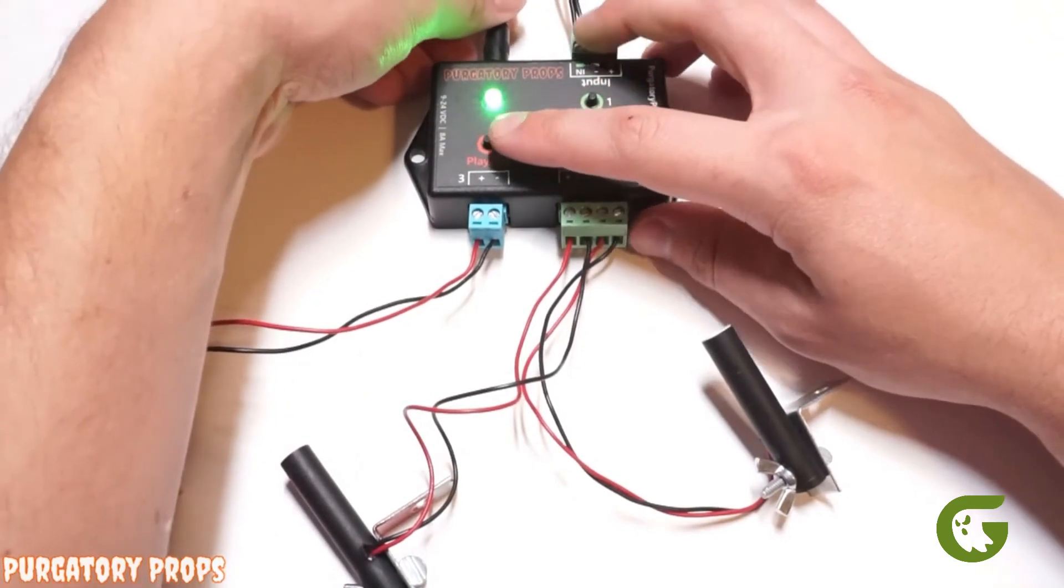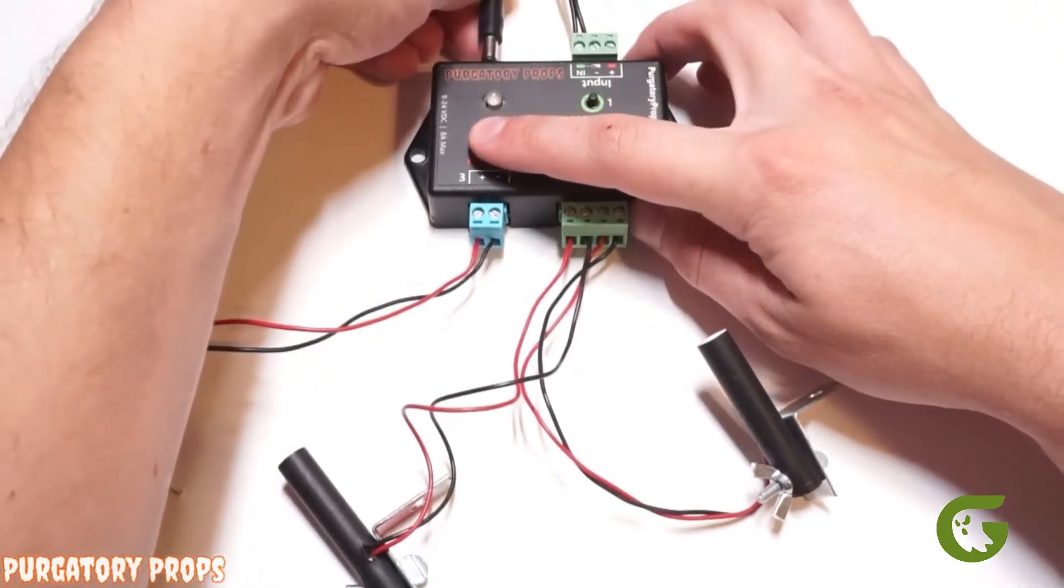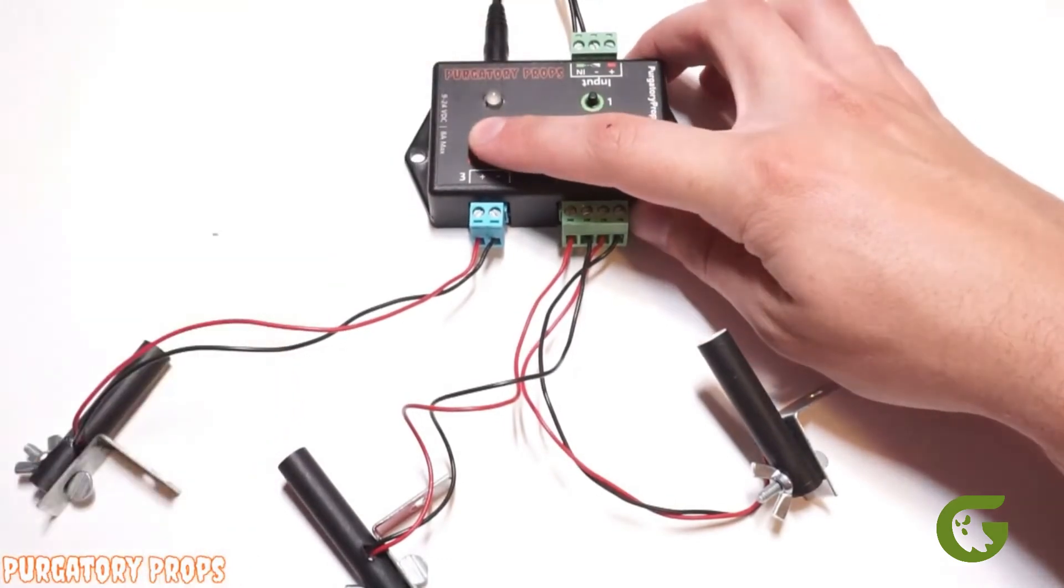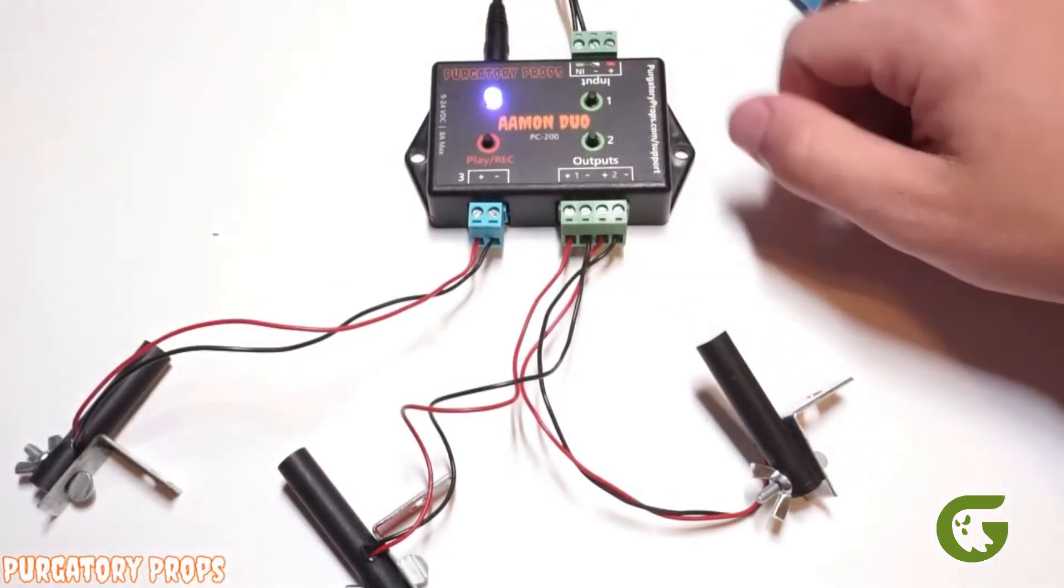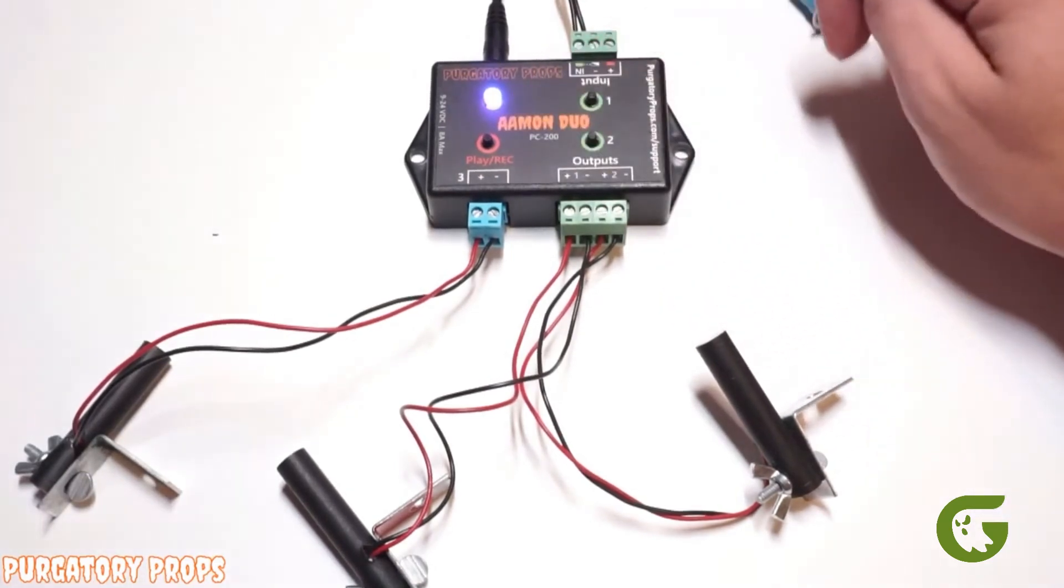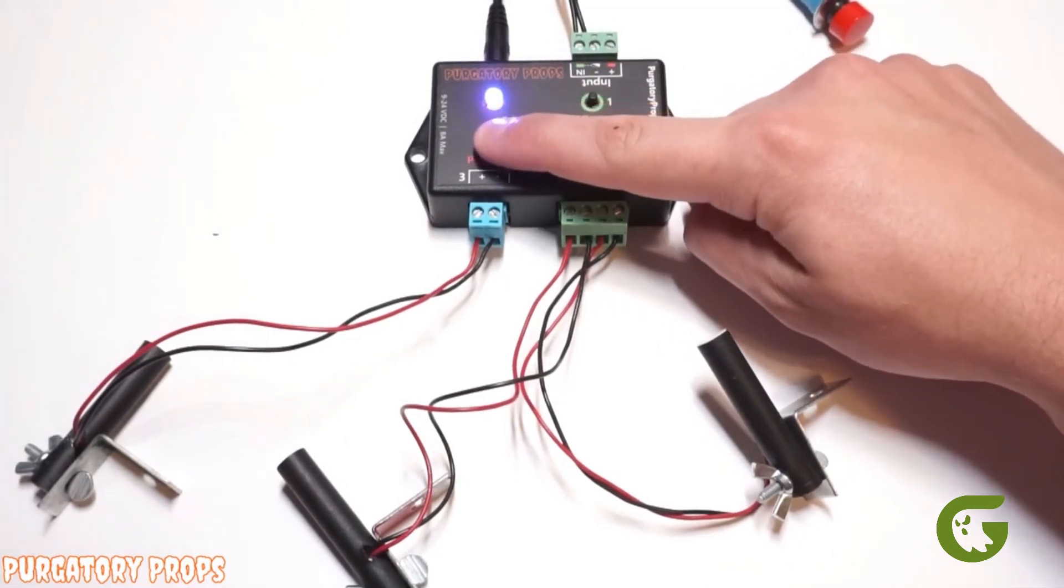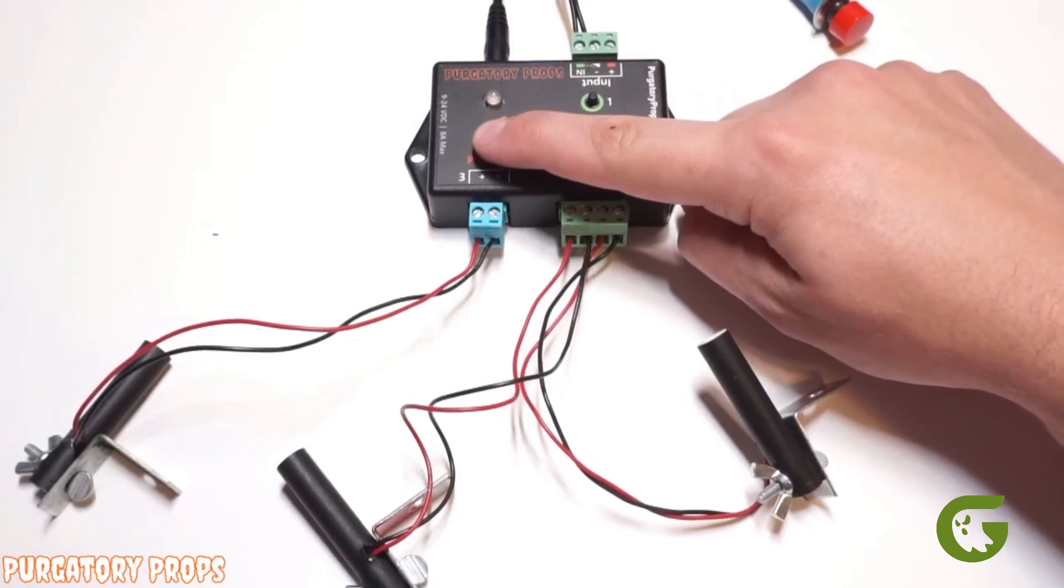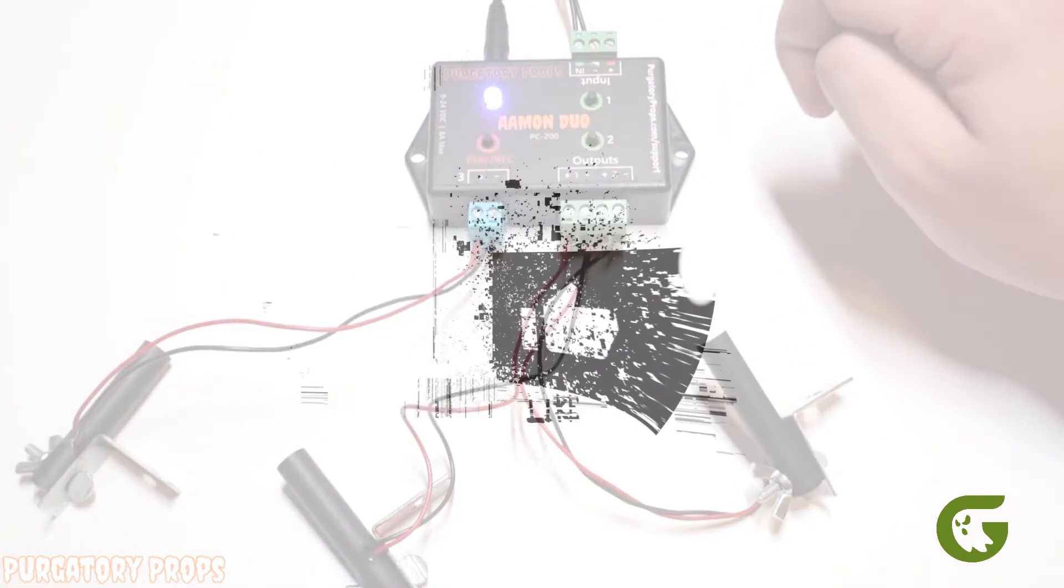If you don't want anyone to mess with your animation, just hold the play record button when turning it on, release when it's red. And now you'll see the purple LED. This indicates that the Amon Duo is in write protect mode. So if I go to record a new animation, you'll see the LED turns off instead of red, indicating that you cannot record anything.